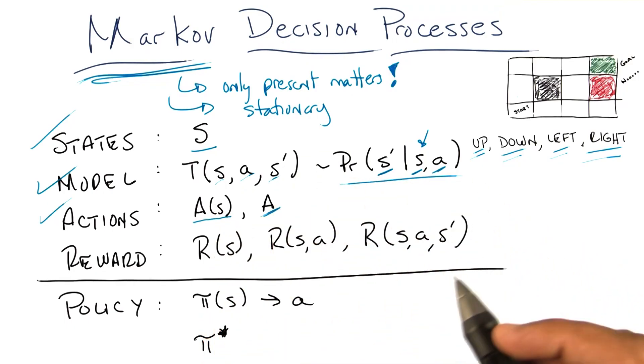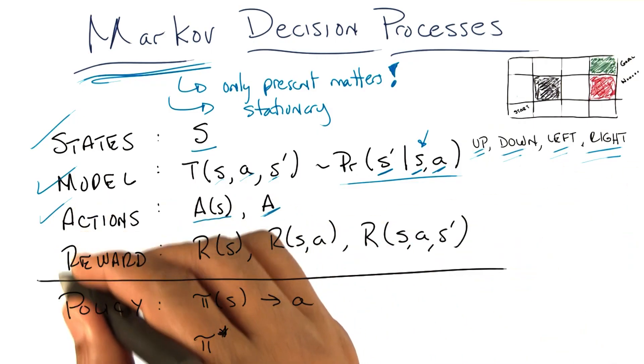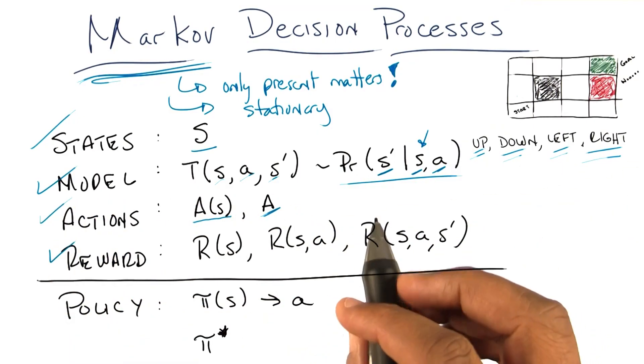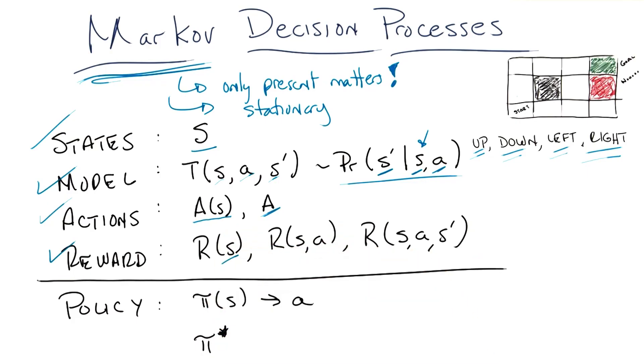Okay. Last thing to point out about the definition of a Markov decision process is the notion of reward. So, reward is simply a scalar value that you get for being in a state. So for example, we might say this green goal is a really good goal.